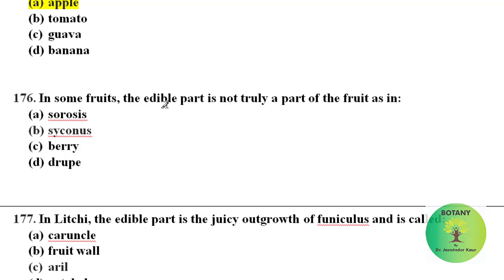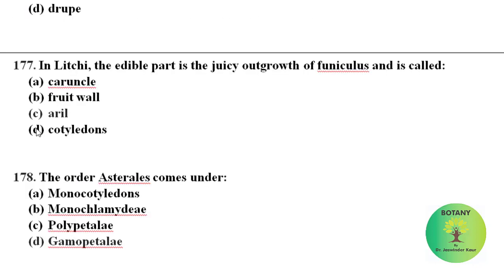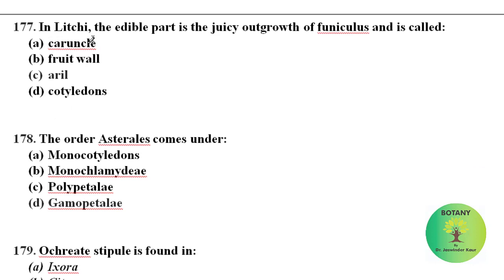In some fruits, the edible part is not truly a part of the fruit — as in the Cypsela type of fruit, where the edible part is the fleshy receptacle. In lychee, the edible part is the juicy outgrowth of the funiculus, and it is called the aril. So the aril of lychee is the edible part.